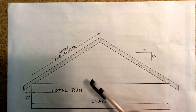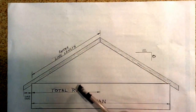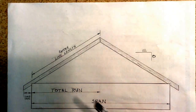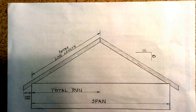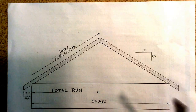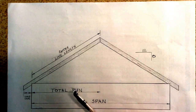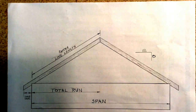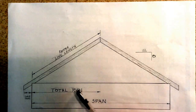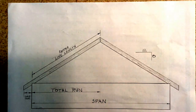To determine our rafter length, we need to find the total run of the rafter, which is usually always equal to one half of the span. If the span is 30 feet, the total run will be 15 feet. If the span is 28 feet, the total run will be 14 feet.